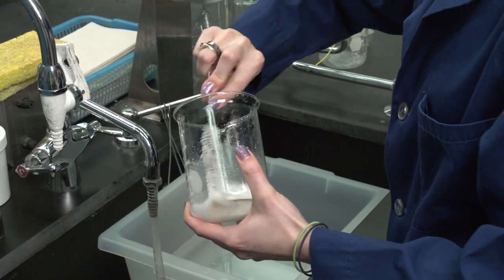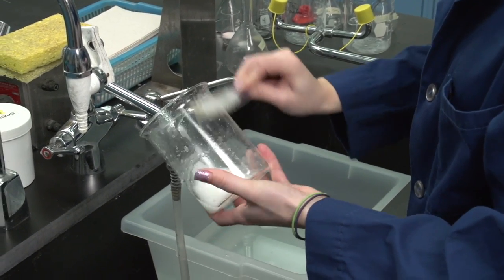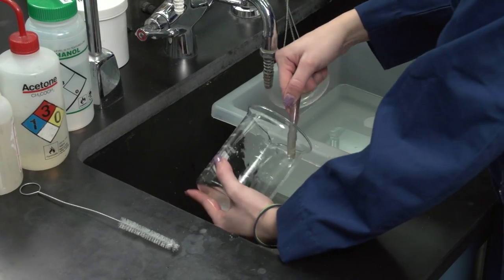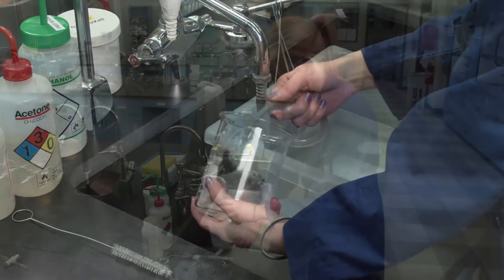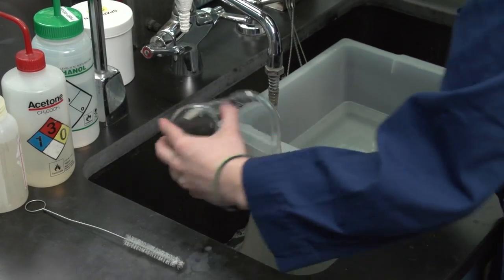General laboratory glassware should be scrubbed inside and out with the available laboratory detergent and brushes, and thoroughly rinsed with tap water to remove cleaners. Finally, glassware should be rinsed with a small amount of distilled or deionized water.